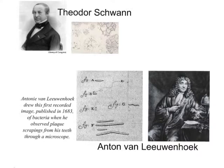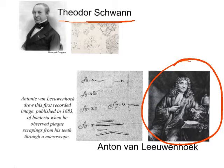In 1839, this man, Theodore Schwann, began to examine animal parts under the microscope. Up until that point, the focus had been on plants. He found that animals, lo and behold, also contained cells — fluid-filled sacs with a nucleus in them.